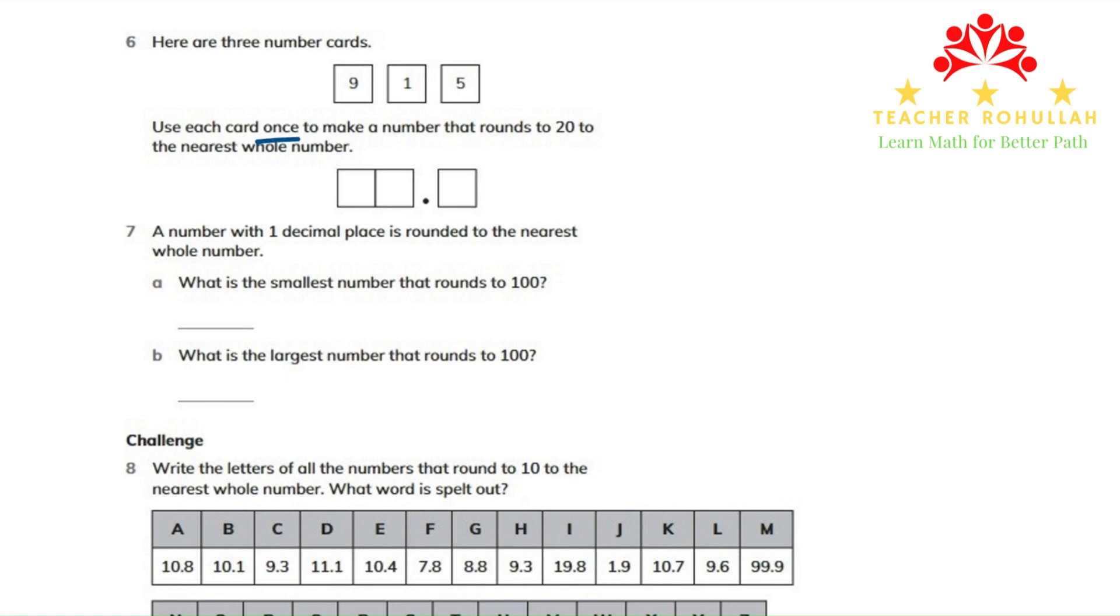Use each card once to make a number that rounds to 20 to the nearest whole number. So we have to place the numbers in a way that when we round up or down, it should give us 20. The number that can be rounded to 20 is 19.5. 19.5 rounds to 20 because the tenth digit is 5 or more.